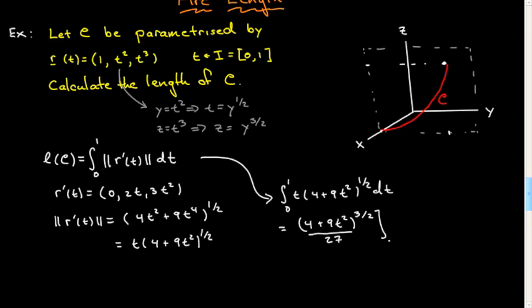And that will be evaluated between 0 and 1, at 1, I get 9 plus 4 is 13, 13 to the three-halves. Oh, I haven't forgotten that, divided by 27. Plug in 0, I get 4 to the three-halves, so it's minus 4 to the three-halves, divided by 27. And there you go, that's your answer. I'll put a box around it.